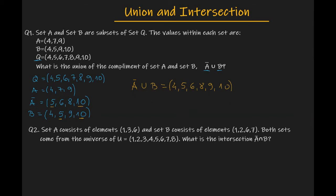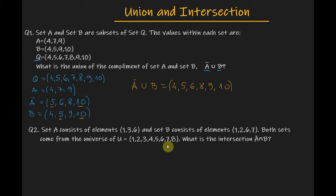Now let's work on our second example. Set A consists of elements 1, 3 and 6, and set B consists of elements 1, 2, 6 and 7. Both sets come from the universe of 1, 2, 3, 4, 5, 6, 7 and 8.